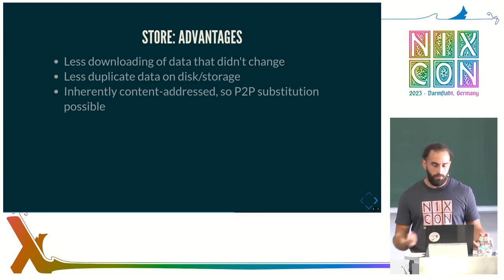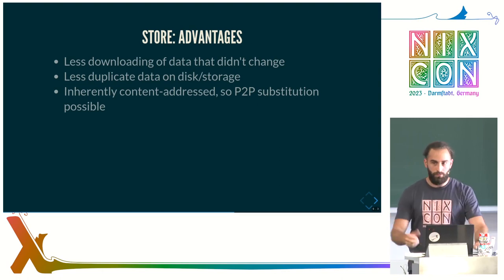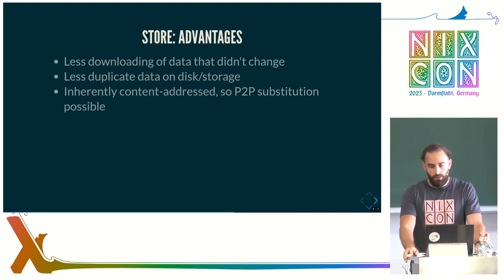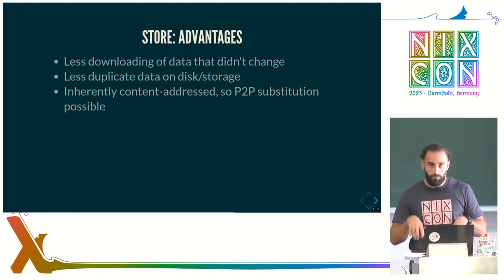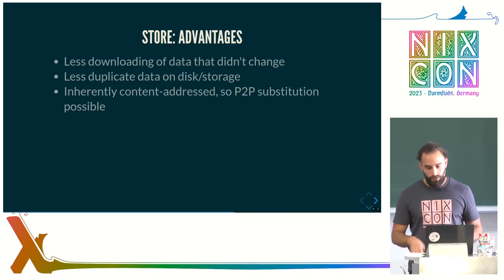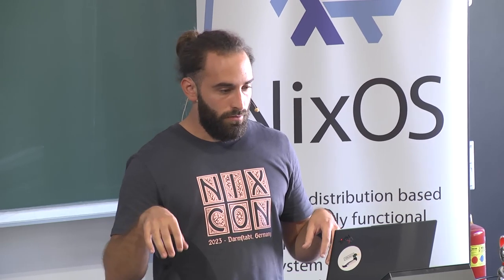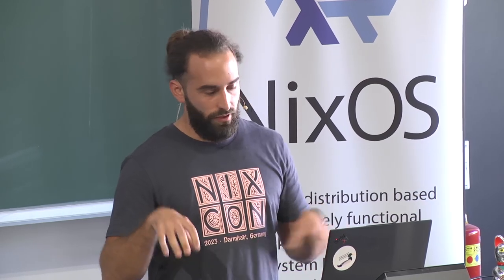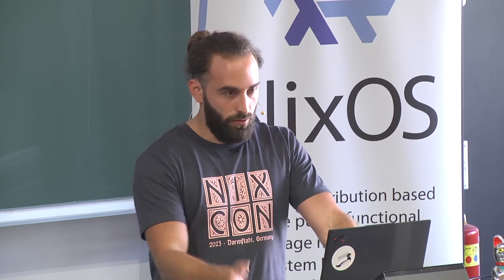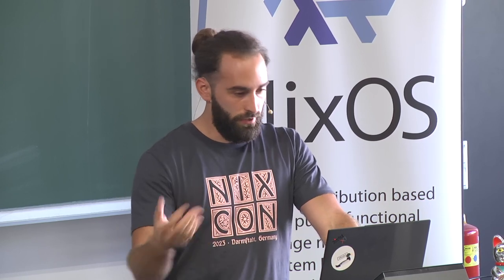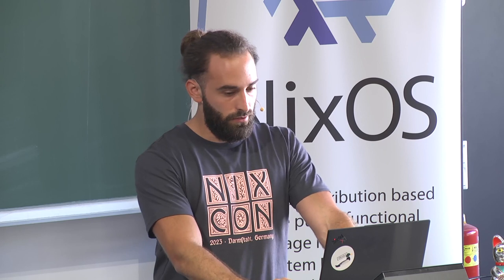Because the blob and directory stores are content-addressed, you can download from your neighbor or another Nix machine if they happen to have the same directories or blobs. Because it is more granular, there is a higher chance you already have part of the graph that makes up your store path — so less downloading of data that did not change, less duplicate data on disk. If you have a binary cache that exposes this on an API, you only store each thing once with some redundancy, without storing redundant data the way the NAR format currently does.